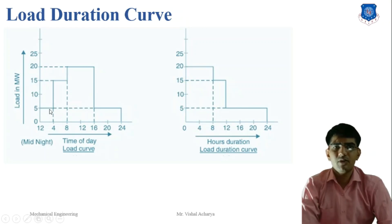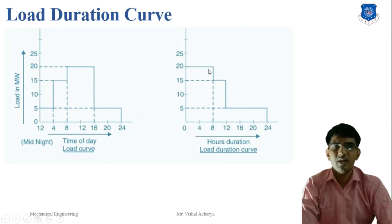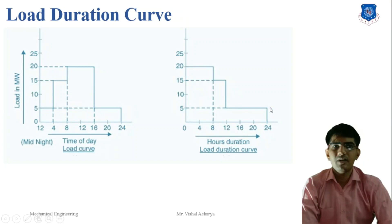Here is an example representing the load curve: from 12 to 4 hours, 5 MW load is required; from 4 to 8 hours, 15 MW load is required; from 8 to 16 hours, 20 MW load is required; from 16 to 24 hours, 5 MW load is required. For the load duration curve, we first find the maximum load, which is 20 MW for 8 hours. So we plot 0 to 8 hours at 20 MW; then 15 MW for a 4-hour duration from 8 to 12; then 5 MW for the remaining 12 hours — 4 hours from 12 to 4 plus 8 hours from 16 to 24. This is the process for plotting the load duration curve.